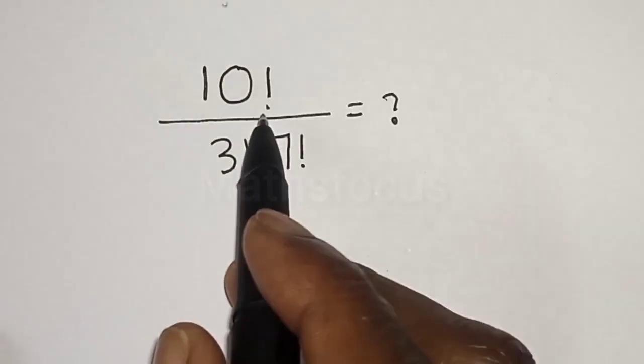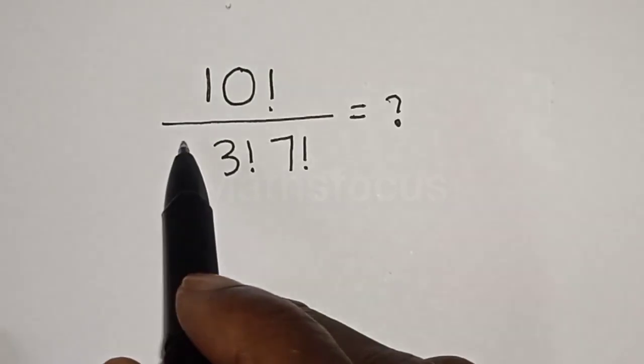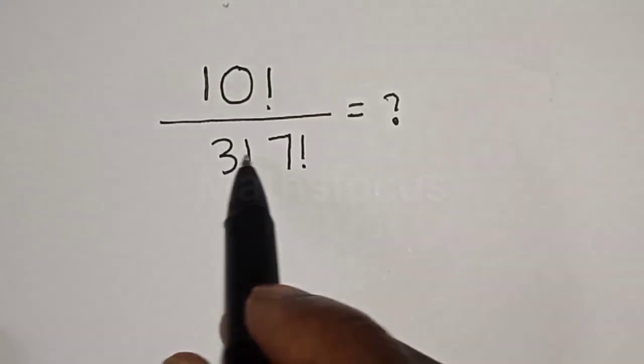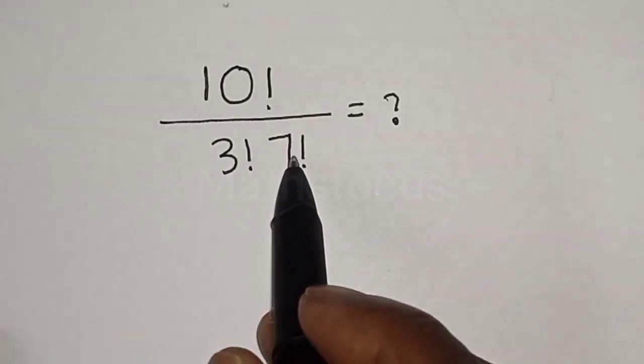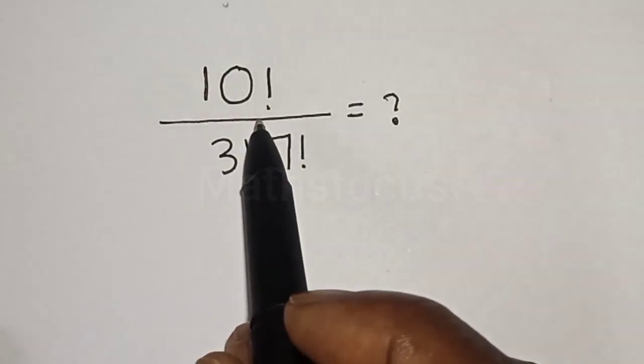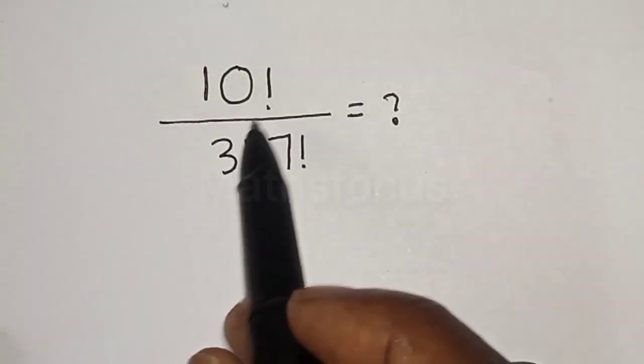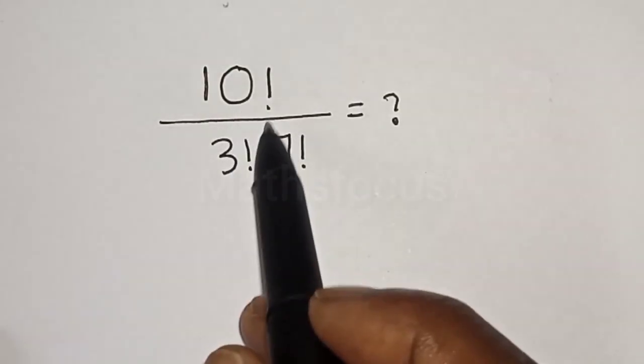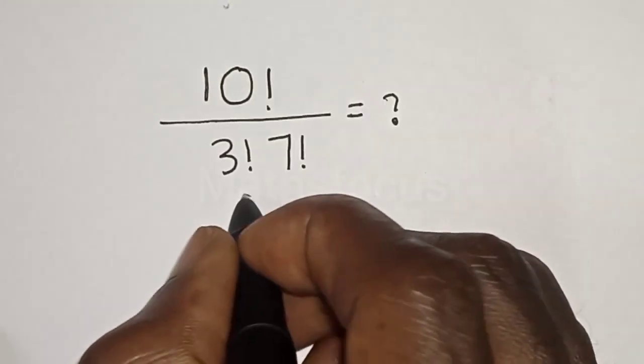10 factorial over 3 factorial 7 factorial is equal to 1. We quickly want to simplify this factorial problem solution.